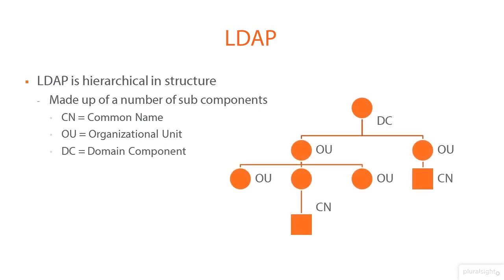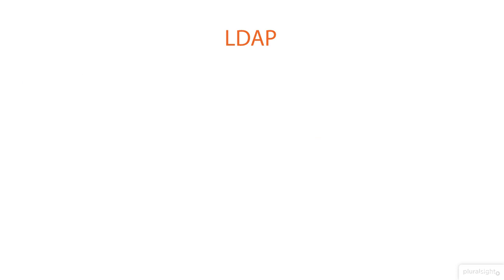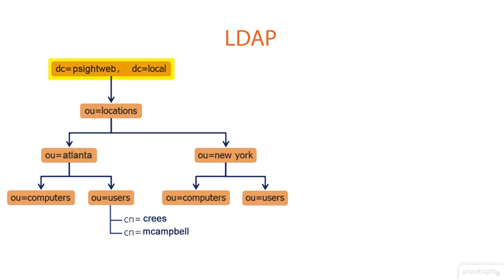Looking at how they flush out, we have a hierarchical structure: our domain component up top, OUs below, and below the OUs they may contain other OUs or common names — the actual resources, whether it be a user, a printer, and so forth. For example, we have PSiteWeb up top as the domain component, DC=PSiteWeb, DC=local. Then OU=Locations, below that OU=Atlanta, below that OUs for computers and users. Under the users OU, we have common names, which are individual users.